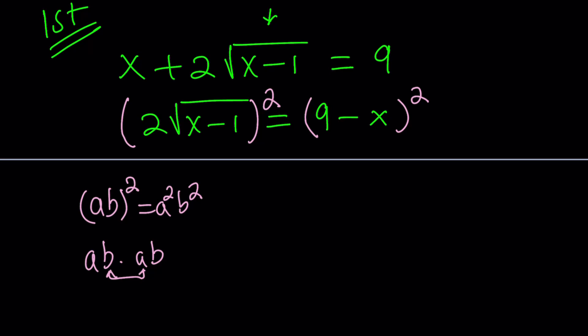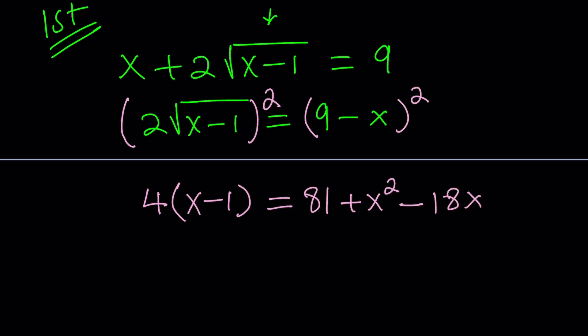So that's the rule. We're going to square the 2, which gives us 4. And then square root of x minus 1 squared will be x minus 1. And on the right hand side, we have the square of a difference. a minus b to the second power, which is a squared plus b squared. That's my way of writing it. I usually write the endpoints first minus 2ab, which is 18x. Let's go ahead and distribute here. 4x minus 4 equals 81 plus x squared minus 18x.